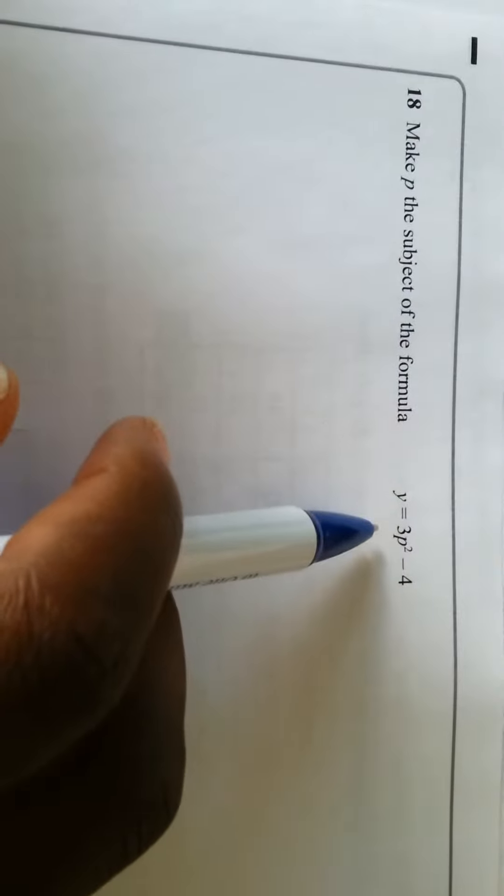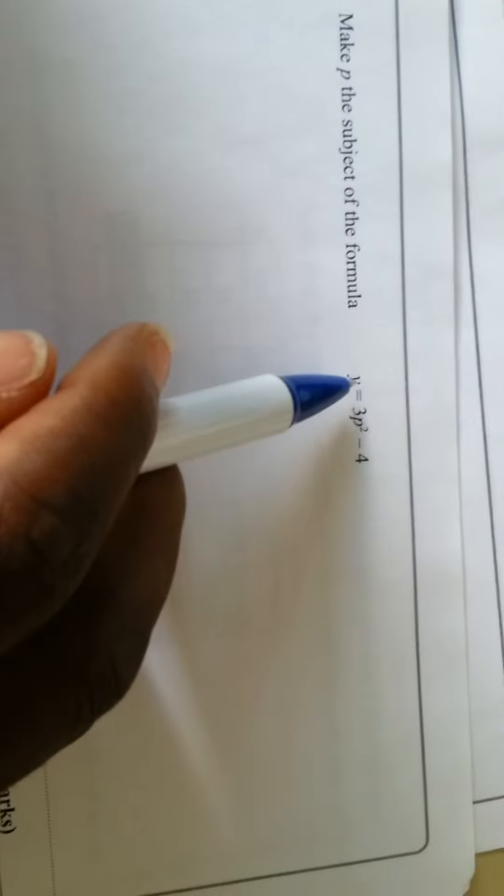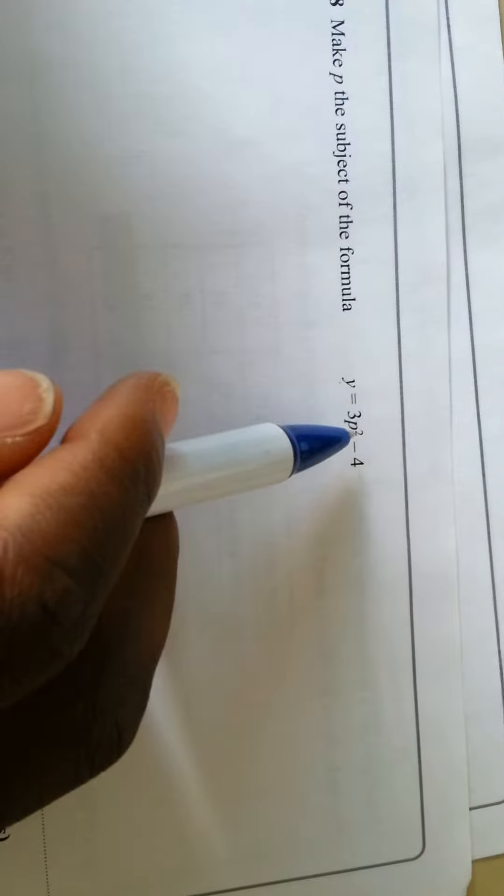Question 18 says make p the subject of the formula in y = 3p² - 4. To make p the subject of the formula means where y is, we're supposed to have p in that position.